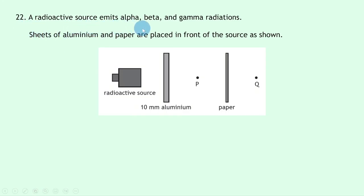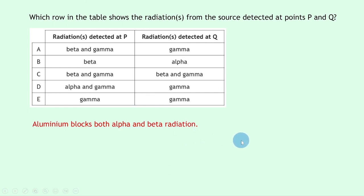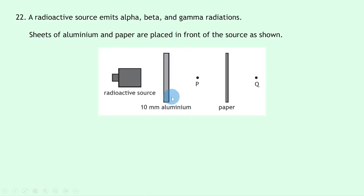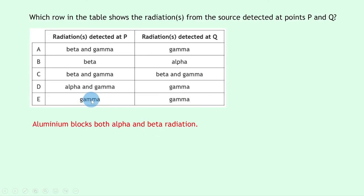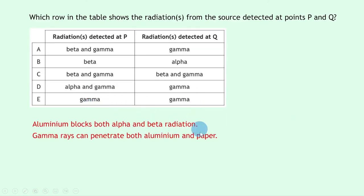Question 22 involves a source emitting alpha, beta, and gamma radiation. Sheets of aluminium and paper are placed in front: point P is after 10 mm of aluminium, and point Q is after additional paper. Aluminium blocks both alpha and beta, so only gamma reaches point P. Gamma also penetrates paper and reaches point Q. So both P and Q detect gamma only, giving answer E.